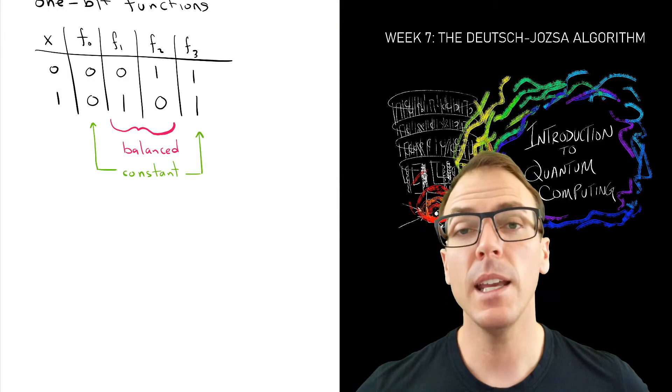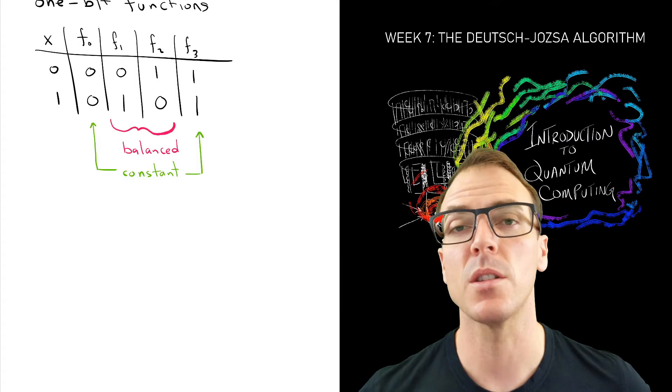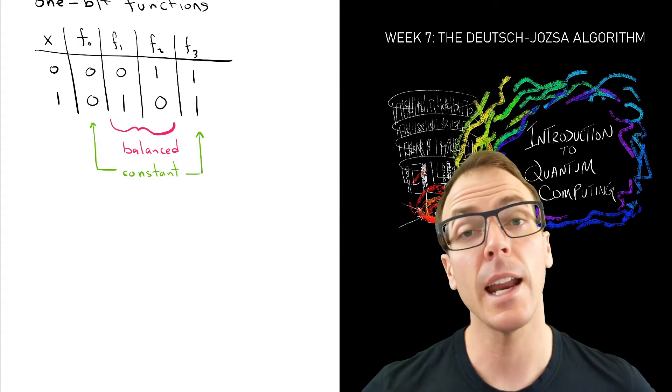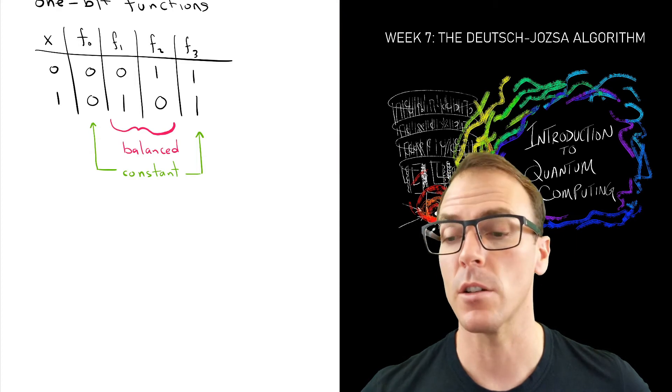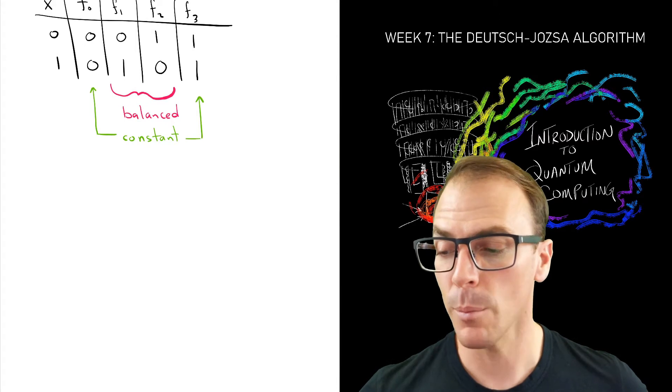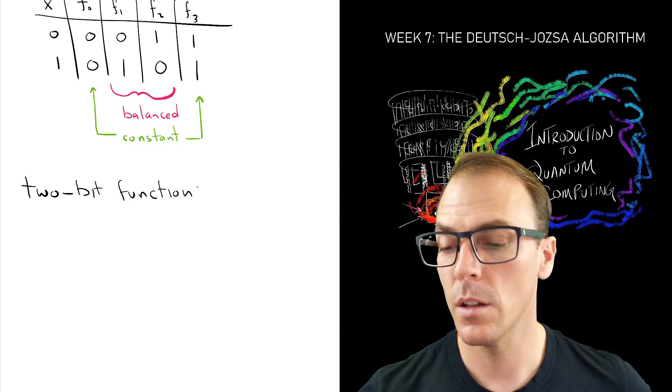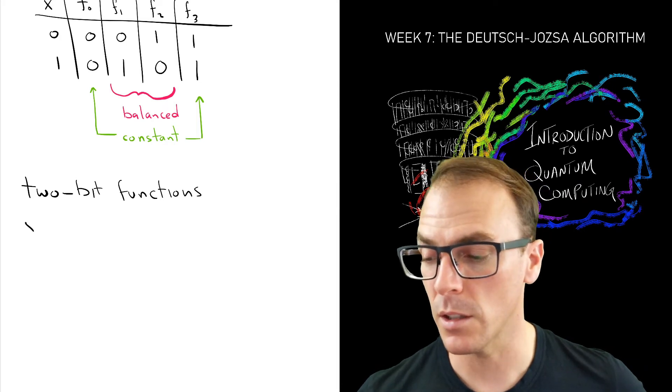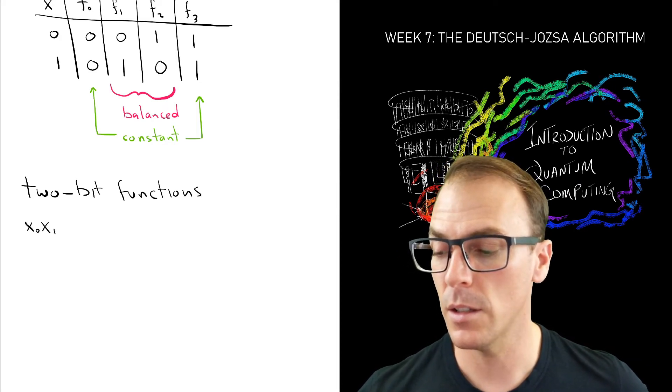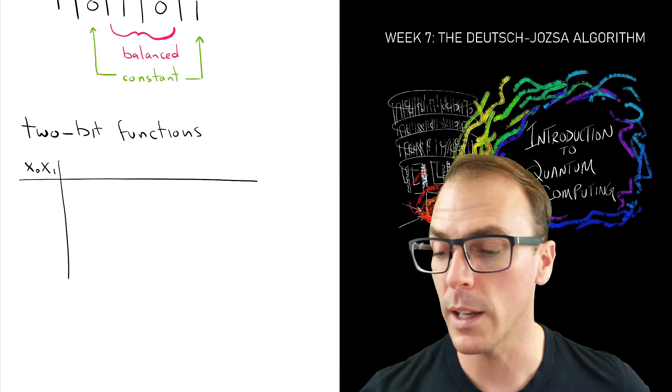Now there are many more functions we can consider if we change the input space. And we can start to categorize these functions by identifying the structures such as balanced versus constant. And there are many ways we can do that. But we'll notice that for two-bit functions there are many more possibilities. And you'll see that things start to explode exponentially quite quickly.